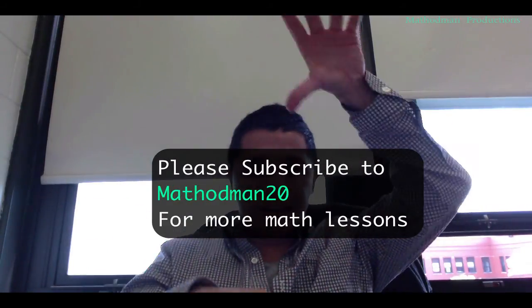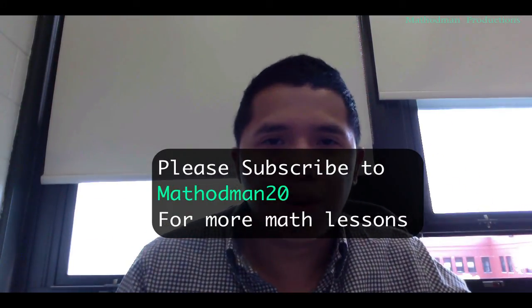So hopefully you know how to use the Pythagorean theorem in these simple right triangle problems. And remember, you need two sides to find the missing length of the third one. And it has to be a 90 degree, or a right triangle. Anyways, thank you for listening, and please subscribe to MathedMan20 for more math lessons.